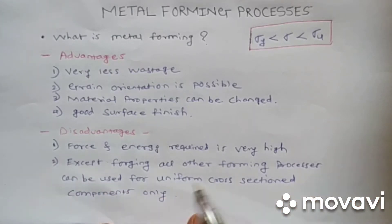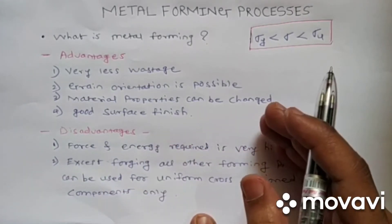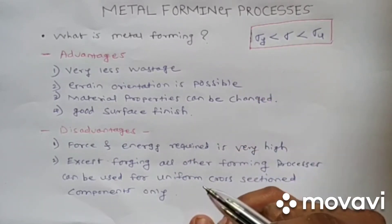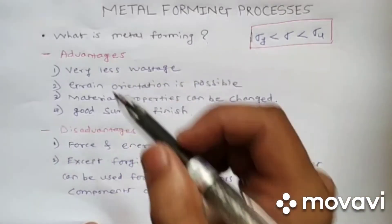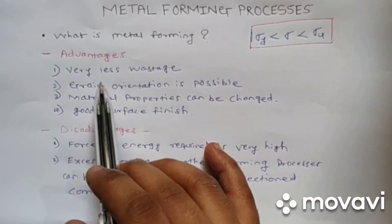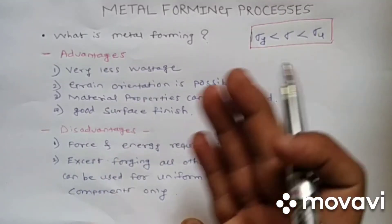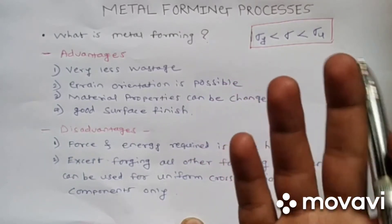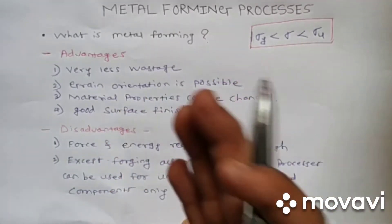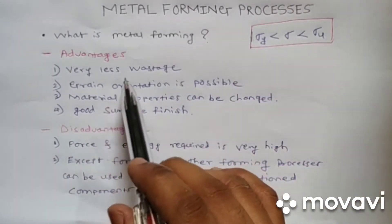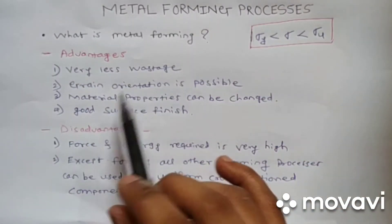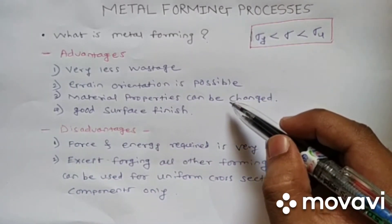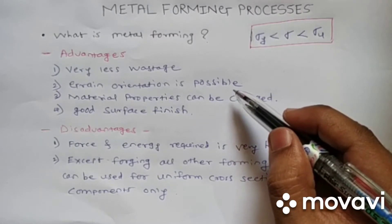There are many forming processes we will cover one by one. First, let's look at the advantages. The vestige in this process is very less — unlike casting where we remove unwanted runners and risers, here vestige is minimal. Also, grain orientation is possible, which is very important in forming.